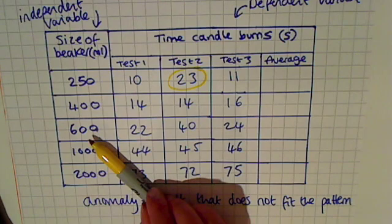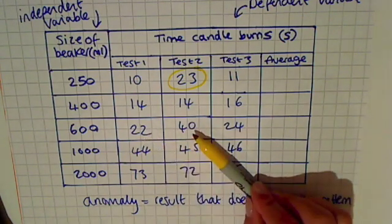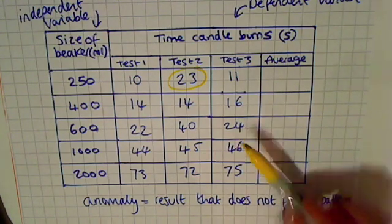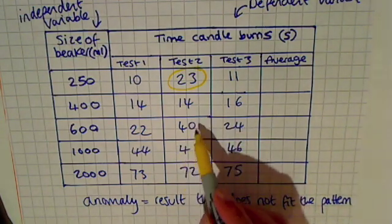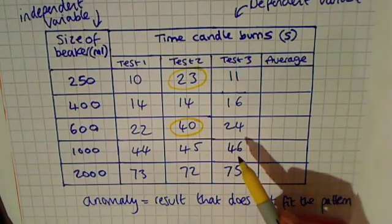For a 600ml beaker, I get the results 22 seconds, 40 seconds, and 24 seconds. In this case, 22 and 24 are very similar, whereas 40 I would identify as an anomalous result.